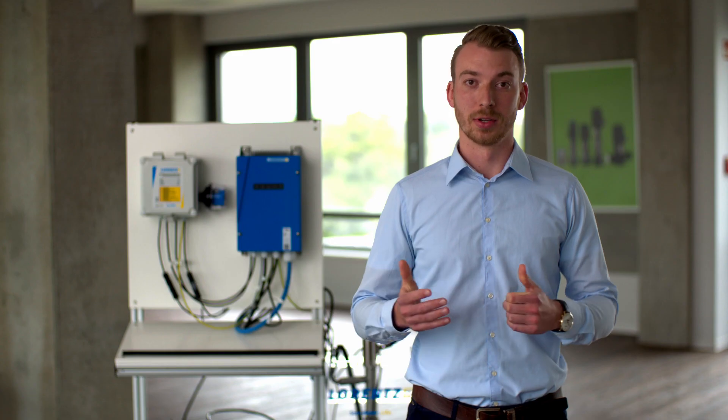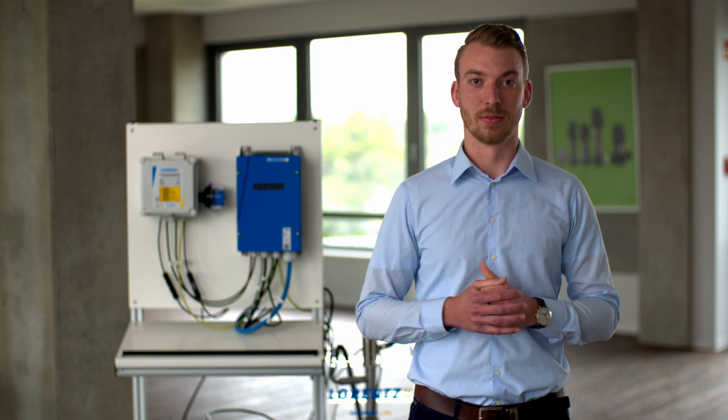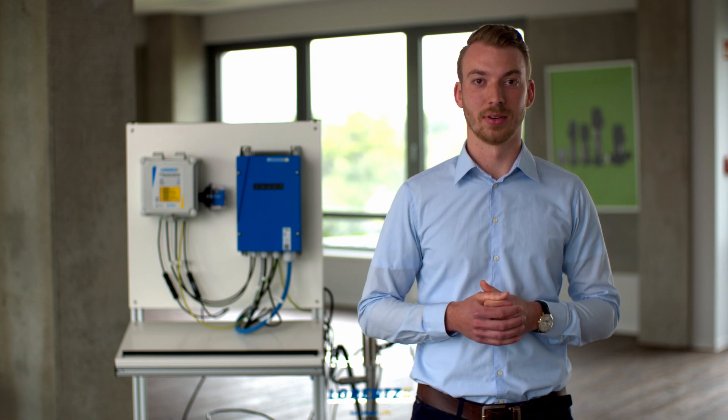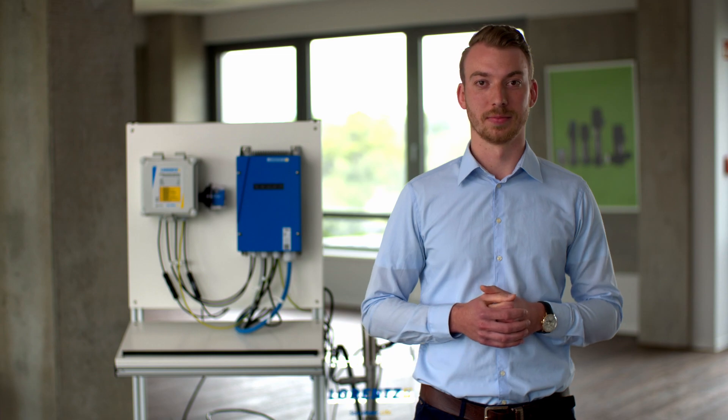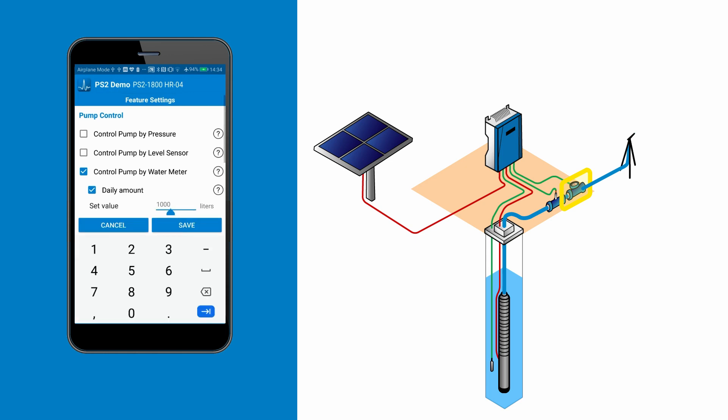The pump controller calculates the flow based on power. Where you want to measure the flow, a Lorentz water meter connects to the controller, providing precise instantaneous flow and measured water volumes. You can define how much water is pumped from the water source to match the needs of crops, people, livestock or processes.